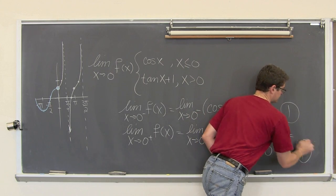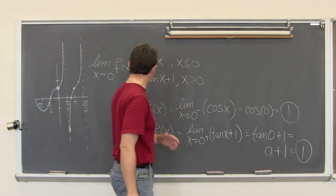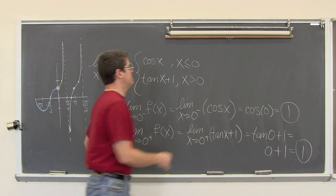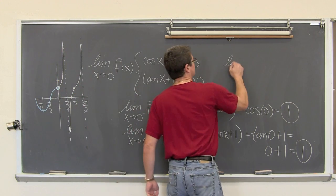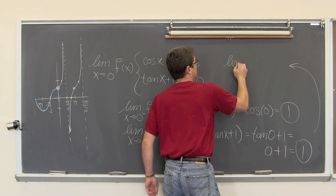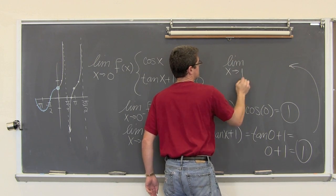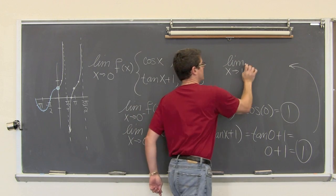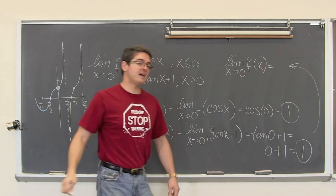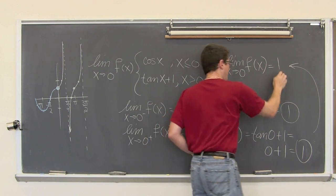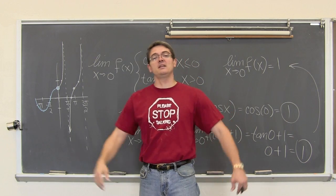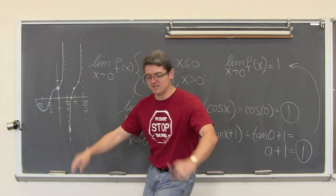Our left and right-hand limits are both equal to 1. So the limit as x approaches 0 of f of x is equal to 1. I am Mr. Tarrou and that is finding limits of piecewise functions.